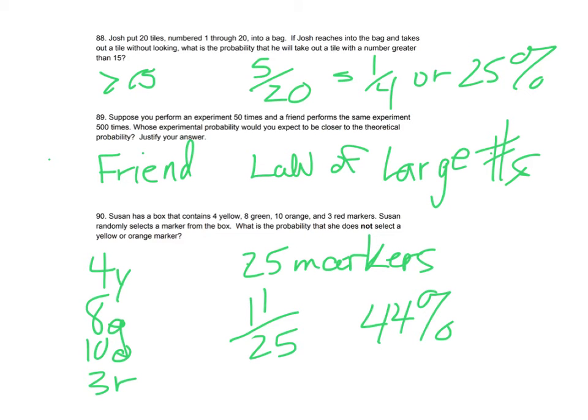All right, so Josh and his 20 tiles and you have to draw a tile that's greater than 15. So that leaves you 16, 17, 18, 19, and 20. So that's five. So five twentieths or one fourth or 25%.